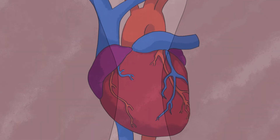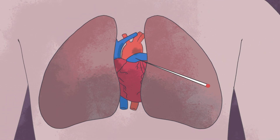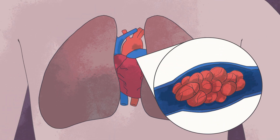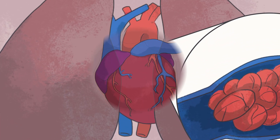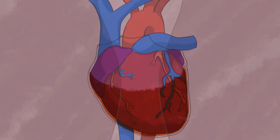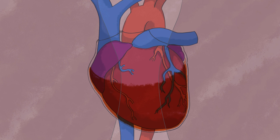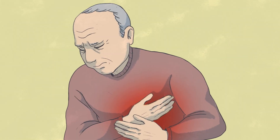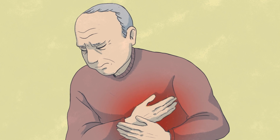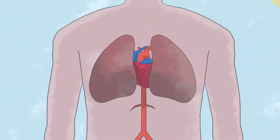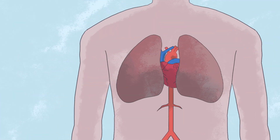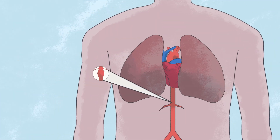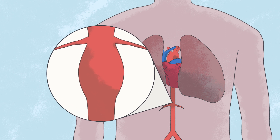Here we have a CT of the heart from a study looking for pulmonary emboli. The pericardium here is high attenuation — this is a hemopericardium, or blood in the pericardium. This patient was having a non-ST elevation myocardial infarction. Hemopericardium can also occur with other conditions such as aortic dissections and malignant pericardial disease.